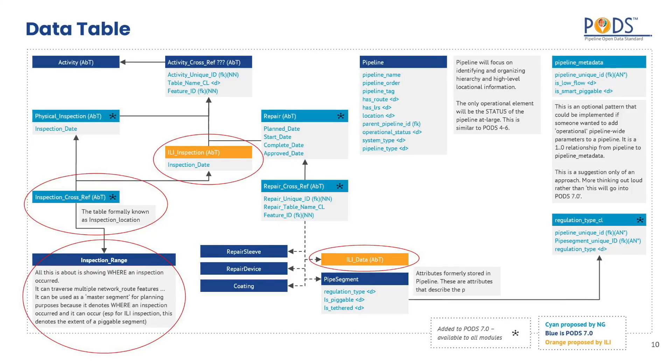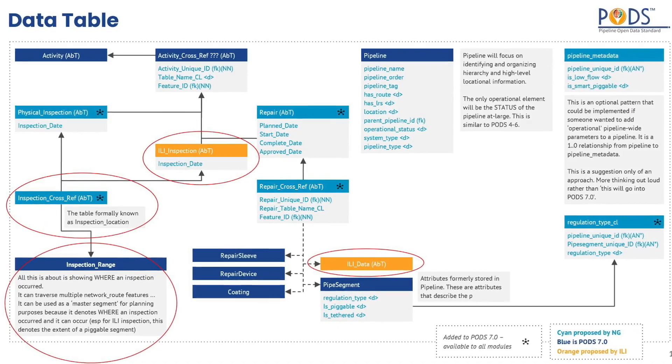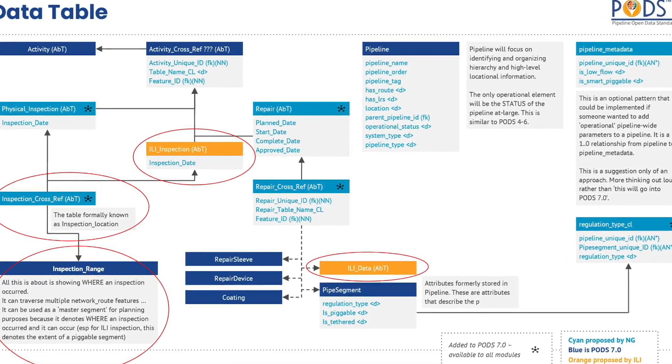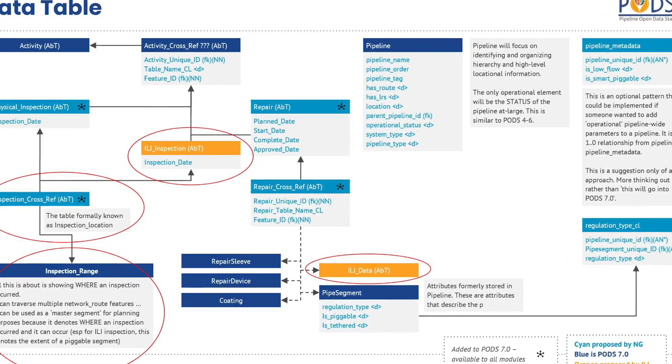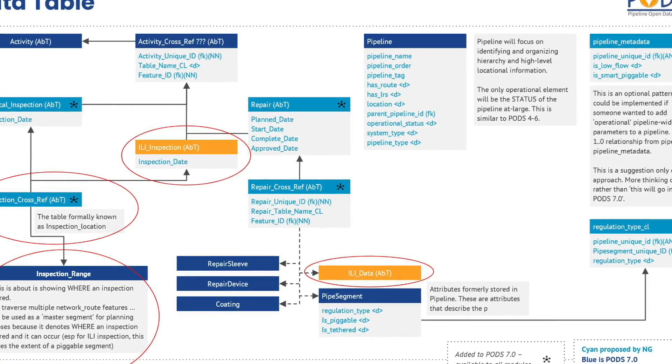These tables can be added back in when an operator is ready to use them. There is now a separate utility model that works the same and is also part of the PODS 7.0.1 rollout, incorporated into future releases. Creating separate modules allows the core model to be smaller.